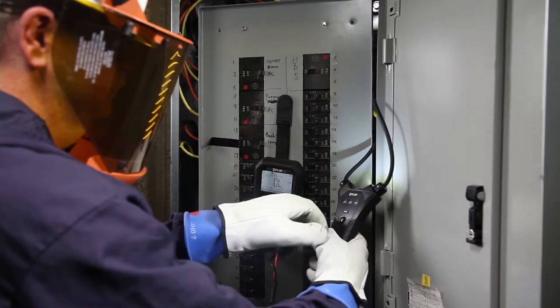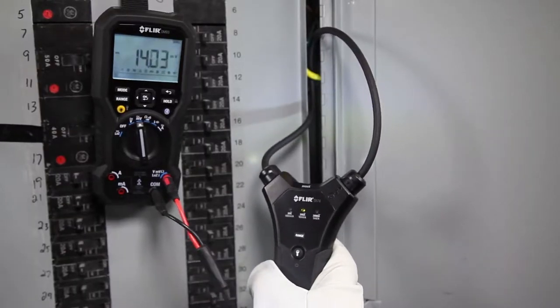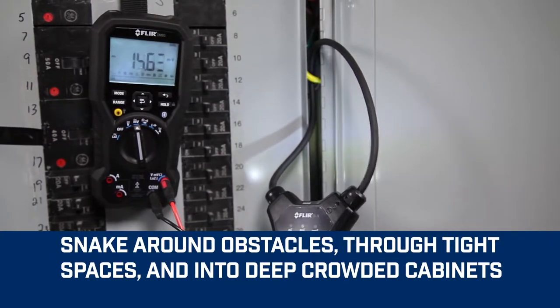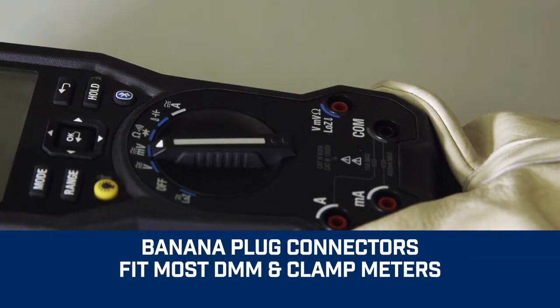Made with a narrow, flexible coil clamp instead of a traditional hard jaw, the TA72 and 74 can snake, bend, and navigate around obstacles, so you can easily take measurements in tight or awkward spots. Built with standard banana plug